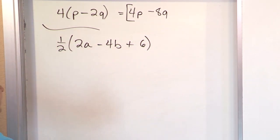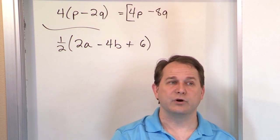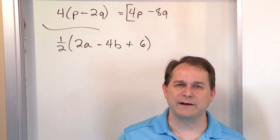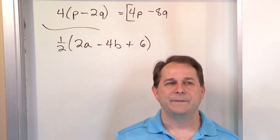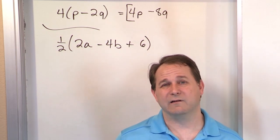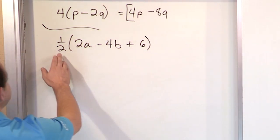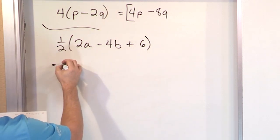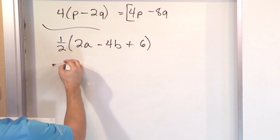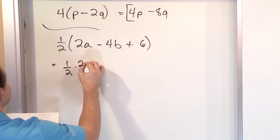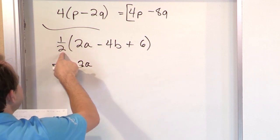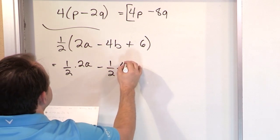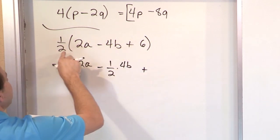If you're afraid of fractions, I'm going to have to tell you now that you need to get comfortable with them. Go back to my Algebra 1 or even pre-algebra and review fractions, because if you don't know how to multiply, simplify, or divide fractions, algebra seems hard when it isn't. So we're going to multiply this 1 half in. The way I want you to write it is step by step — write it as 1 half times 2a, then minus 1 half times 4b, then plus 1 half times 6.